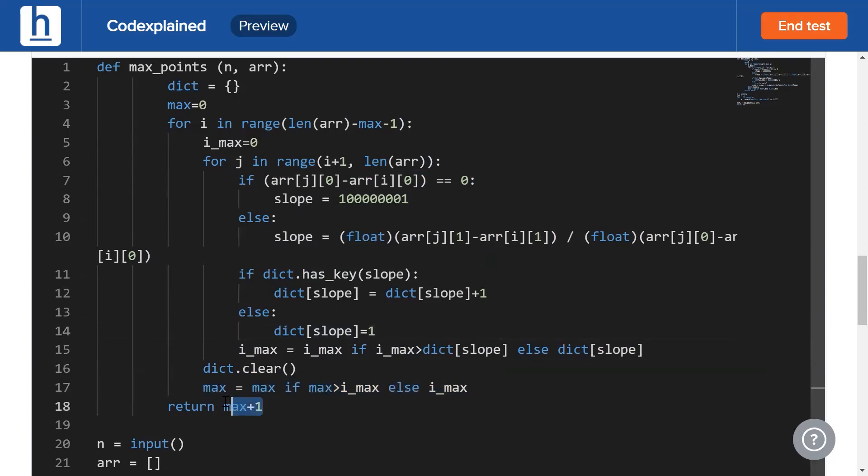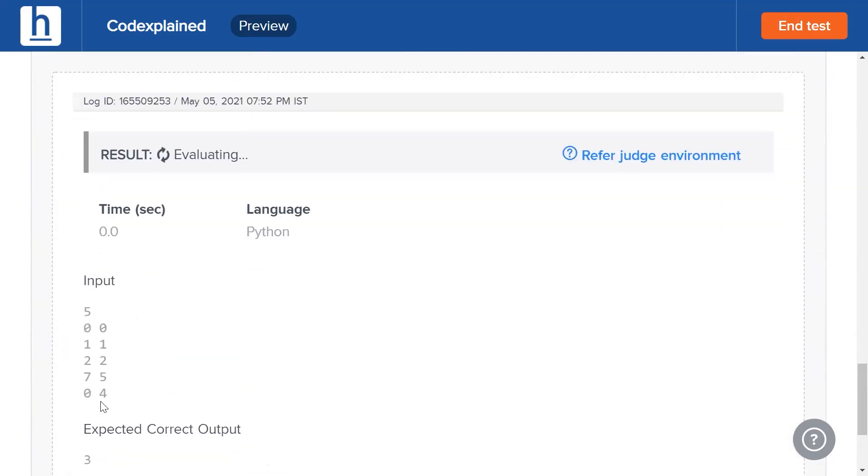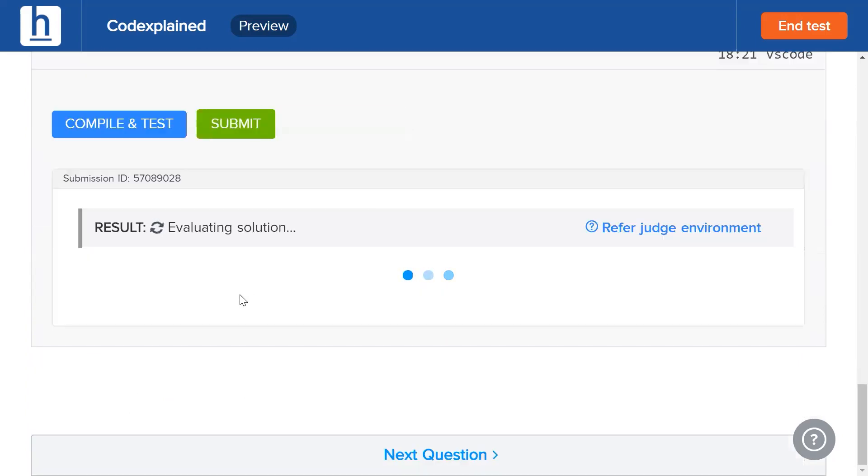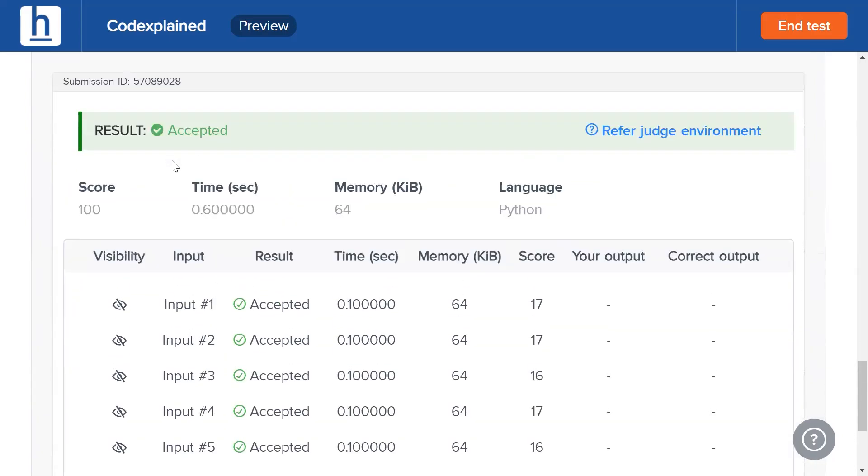Now, we have to return max plus 1 since we don't account for the ith point. Now, let's see if this works. Compile and test. A sample test case has been passed. Submit. Beautiful. Every test case has been accepted.